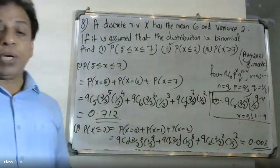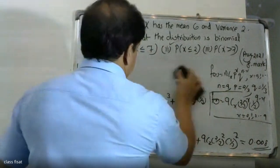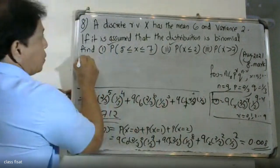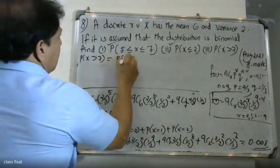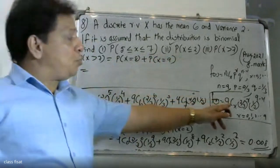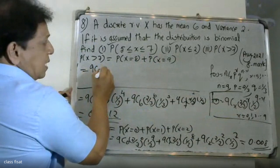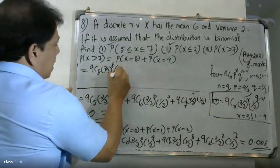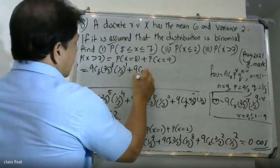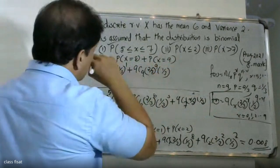For P(x > 7): this equals P(x=8) + P(x=9). We compute 9C8 times (2/3)^8 times (1/3)^1, plus 9C9 times (2/3)^9 times (1/3)^0. This gives the final answer for P(x > 7).